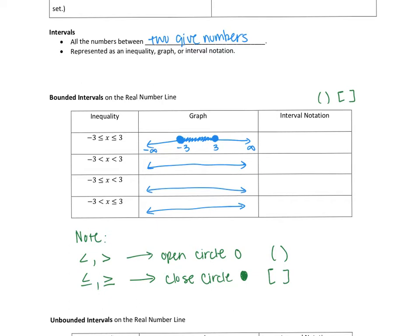In interval notation, you always write the smallest number first, then the bigger number — there should always be two numbers in an interval. So in this case, the smallest number is negative three. I'm going to write negative three, comma, then the bigger number, which is three. Both had closed circles, so both get brackets: [-3, 3].